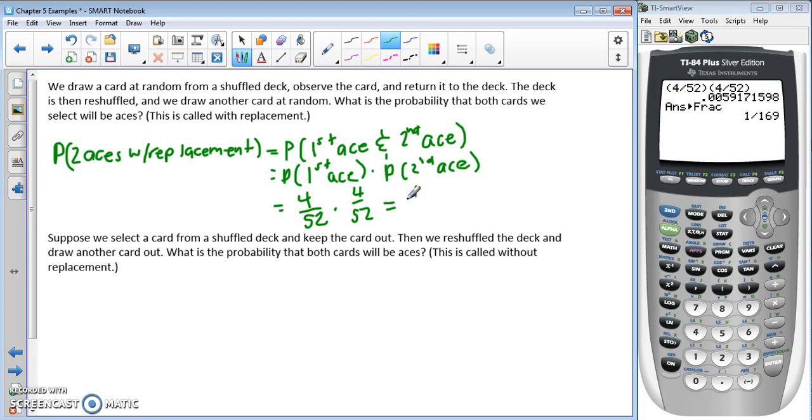We get 1 out of 169, or approximately 0.0059. Another way to think about this, since we're doing two aces in a row, is we can write this as 4 out of 52 squared. That will be important later on.